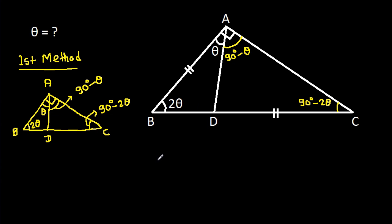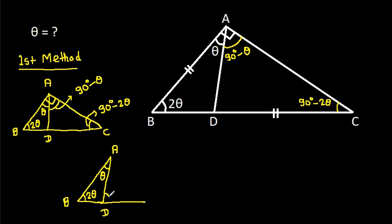Now in triangle ABD, this angle is theta and this angle is 2 theta. So this exterior angle will be theta plus 2 theta, which will be 3 theta.